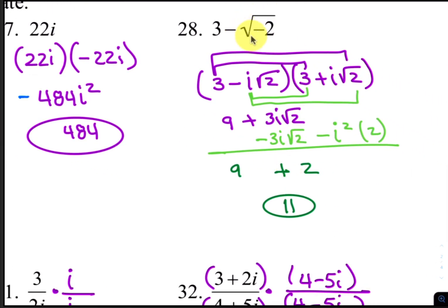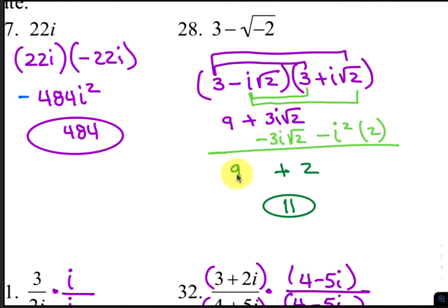First we have to take the i out of this radical, so that would make it 3 minus i square root of 2. Its conjugate is 3 plus i square root of 2. Distributing: 3 times 3, 3 times i square root of 2, negative i square root of 2 times 3, and negative i square root of 2 times positive i square root of 2. The result is 9 plus 3i square root of 2 minus 3i square root of 2 minus i squared times 2. The middle terms cancel, and negative i squared times 2 becomes positive 2. Added to the 9 makes 11.